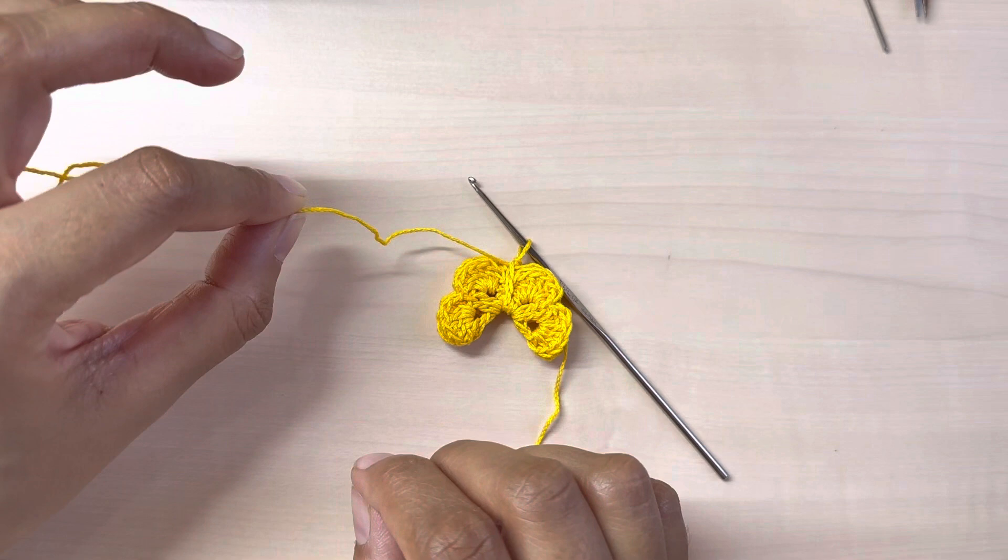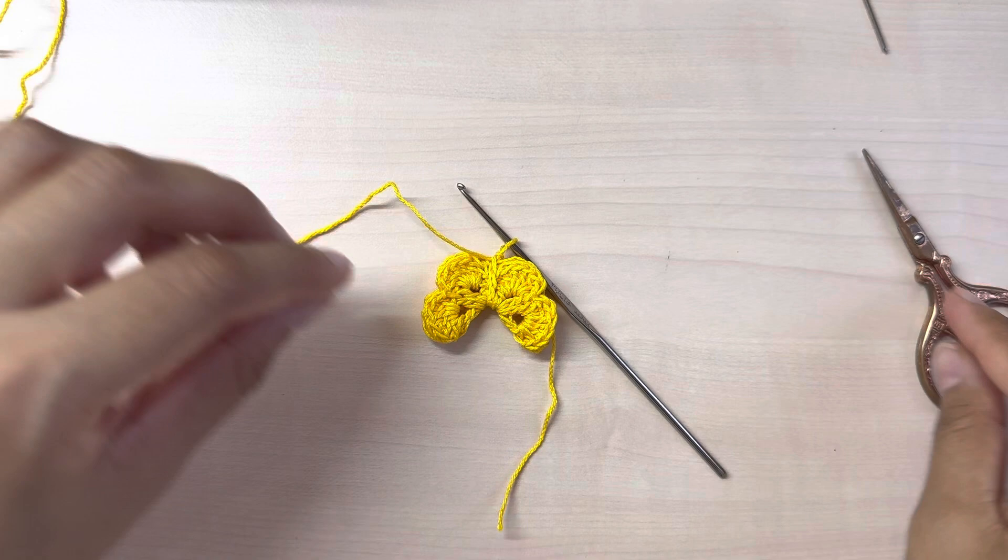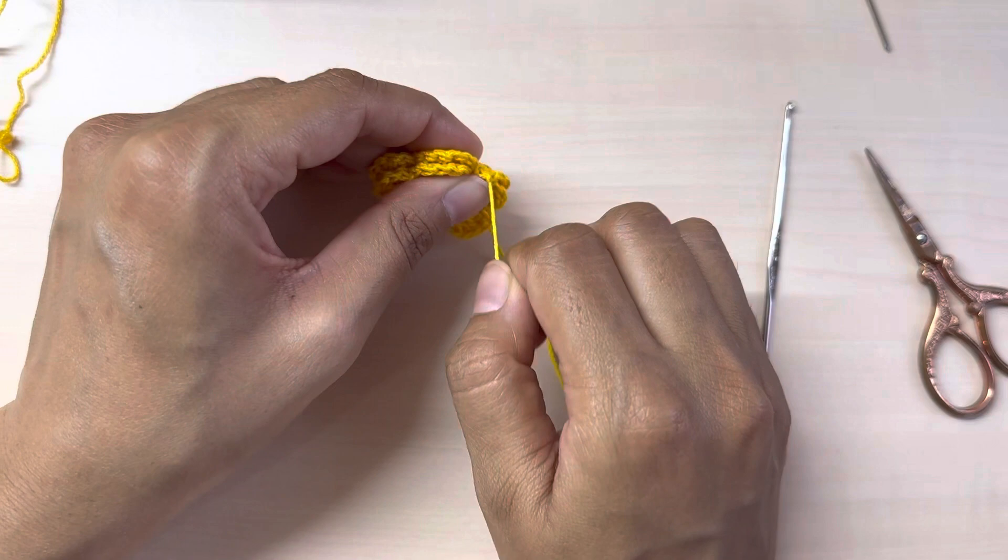Cut off your working thread. Pull out your crochet thread from here, pull it tightly, and now we can weave in all our ends using a darning needle.